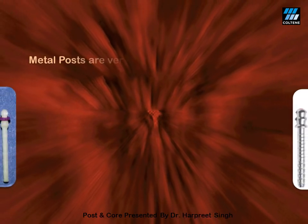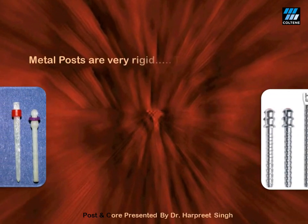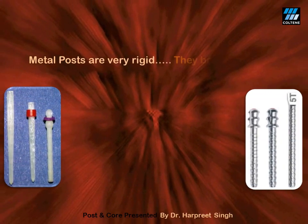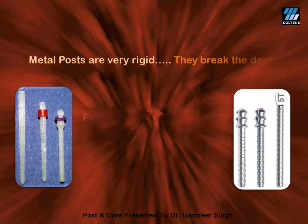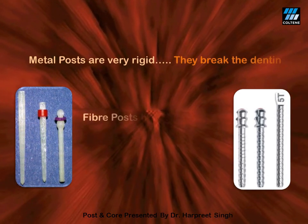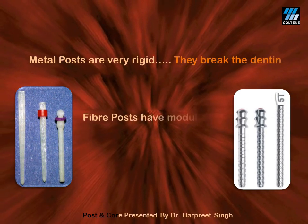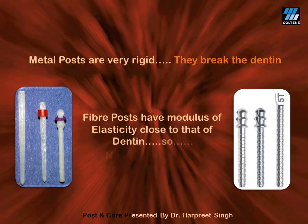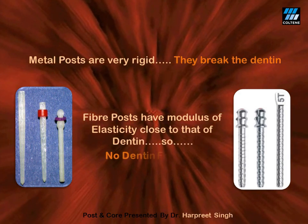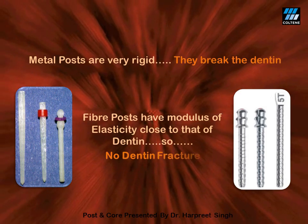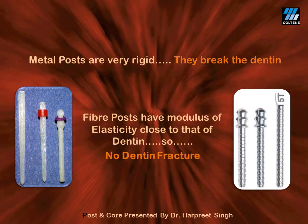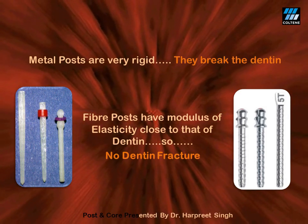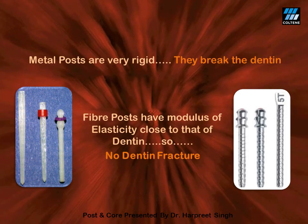When you are using a metal post, since it is more rigid than dentine, it may cause the fracture of dentine. On the other hand, the modulus of elasticity of a fibre post is almost similar to that of dentine, so there is no fracture of dentine during function.